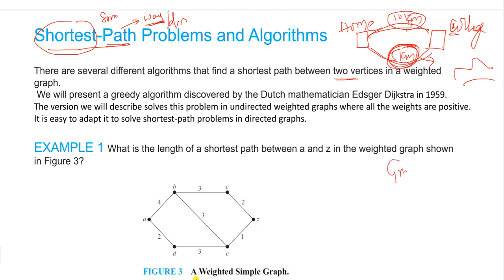This is a graph concept from unit 5. A graph is nothing but a collection of vertices as well as edges. An edge is the line or link between two vertices. We have several vertices, and there should be some path between them. In order to find the shortest path between the vertices, we use different algorithms.